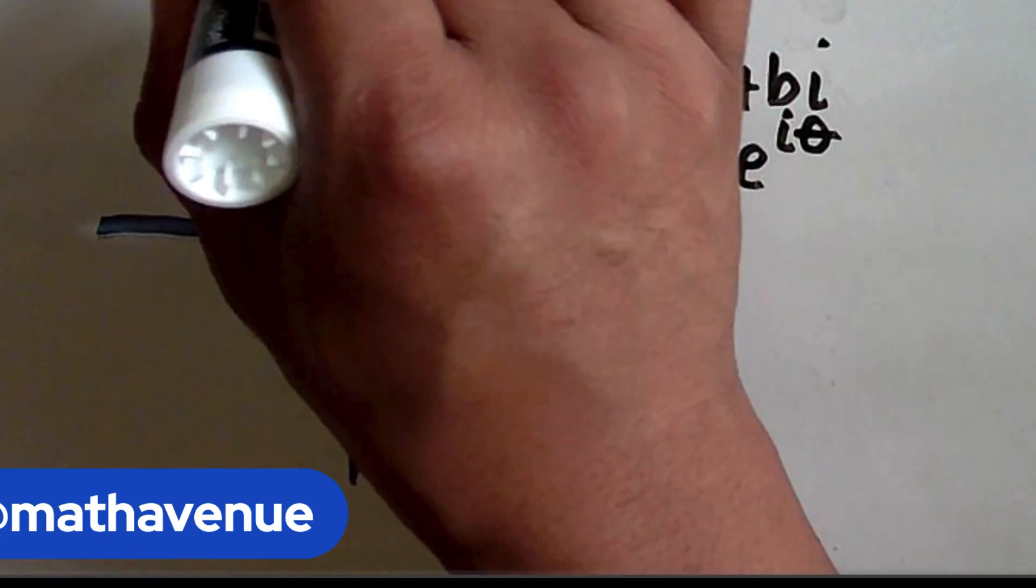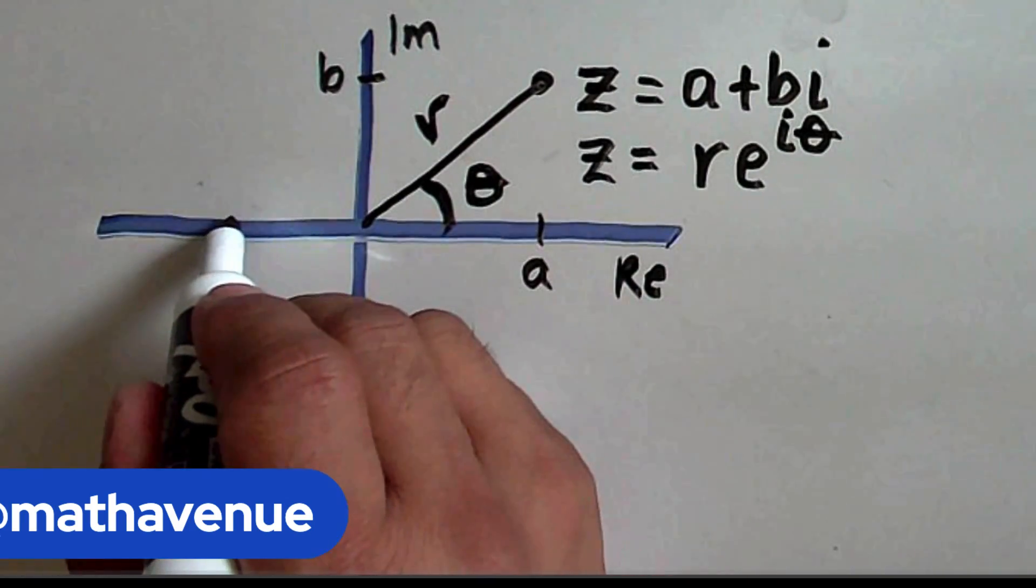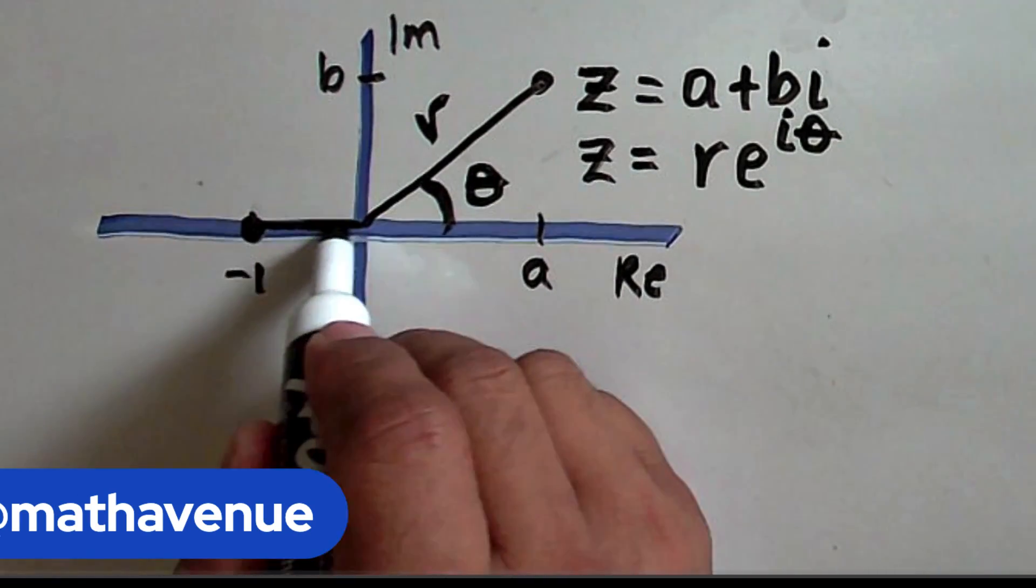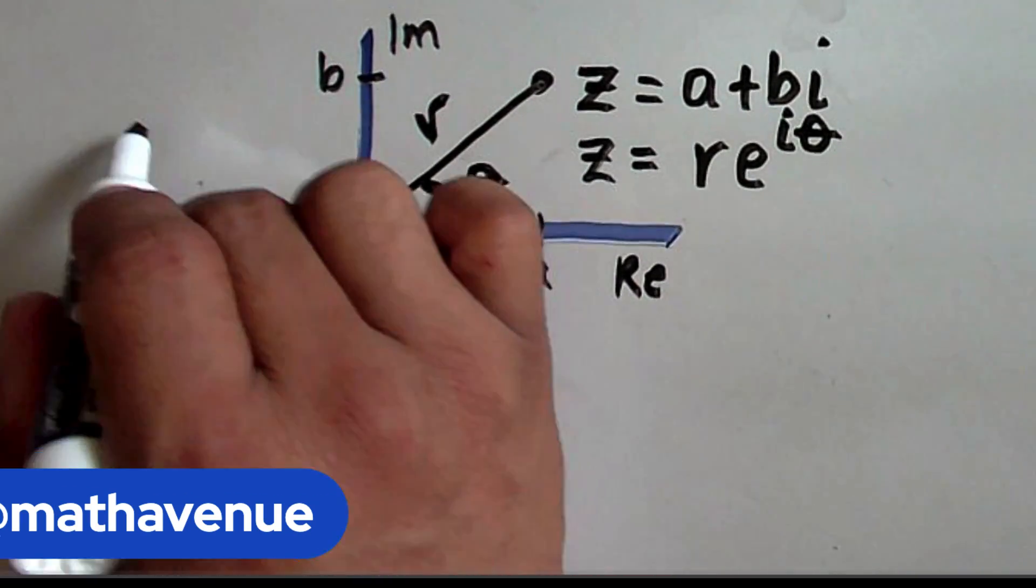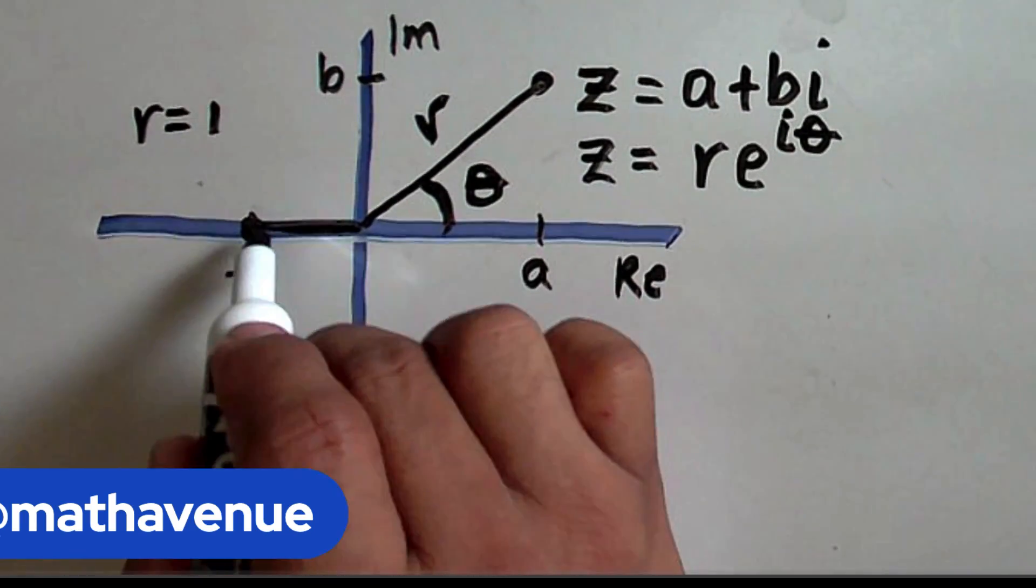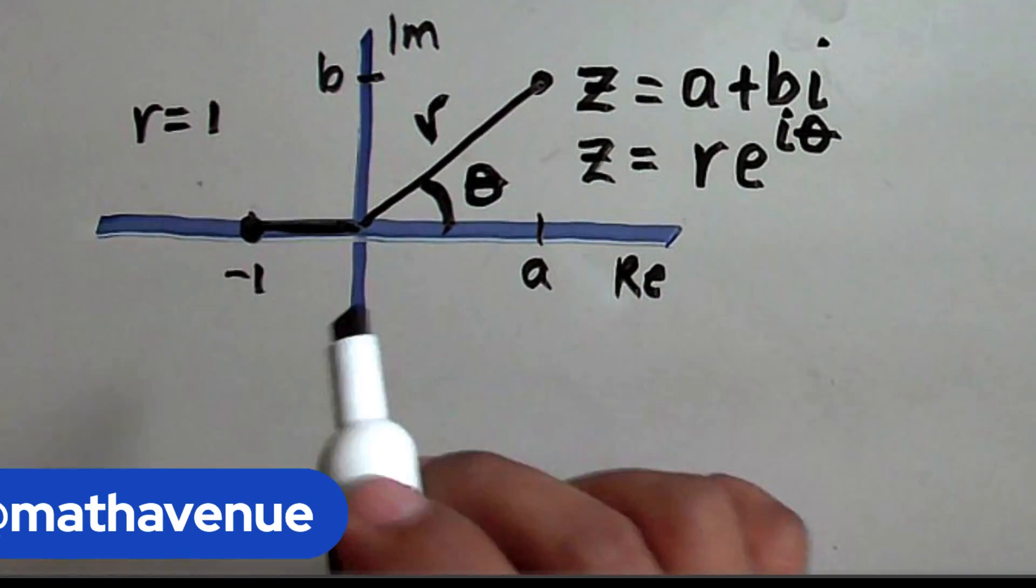Now, where is this negative 1? This negative 1 is somewhere here, and to describe this point, we need a radius. So, its radius is equal to 1.